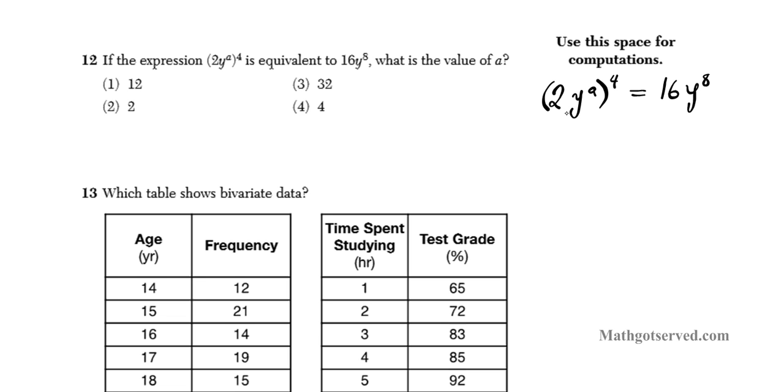The first thing we're going to do is simplify or expand the left side as much as we can. We're going to use the power of a product of powers property here. It basically means you have to distribute, it requires you to distribute the power to the product of powers here. 2 is a power to the first power. So what we're going to do is basically multiply this power by these powers here. You're going to have 2 to the 4th, y to the 4 times a, which is 4a. Remember to always multiply the powers. Equals 16y to the 8th.